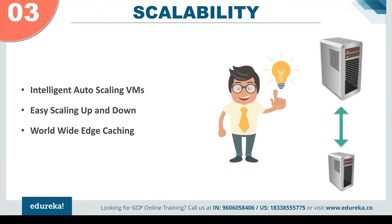Coming down to the top three reasons — at number three we have scalability. You can easily scale up or down your machines depending upon your requirements, and everything is made simpler by Google. The Google VMs are auto-scalable, with an auto scaler that scales up or down your instances according to the traffic it receives, saving money and making tasks simpler. This is a really cool feature as it decreases the overhead and engagement effort required for this job.